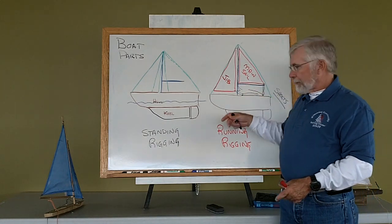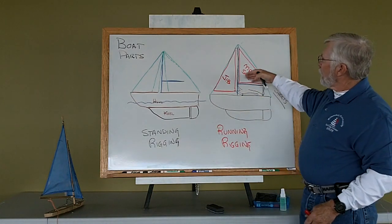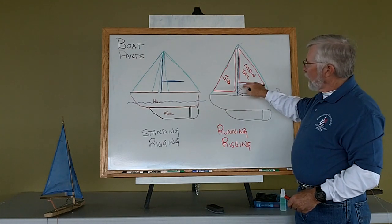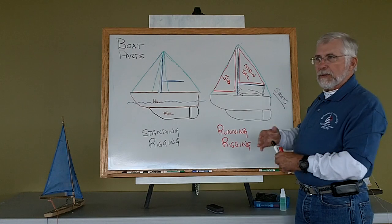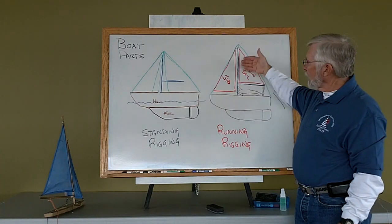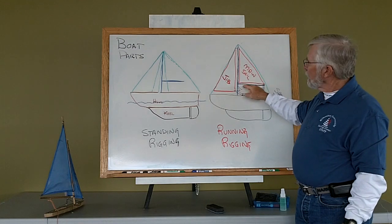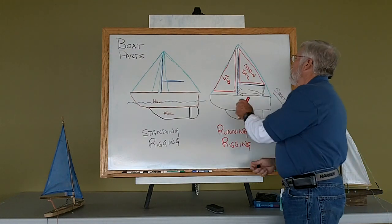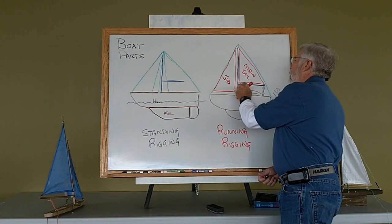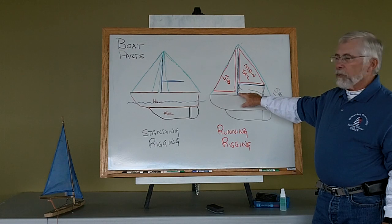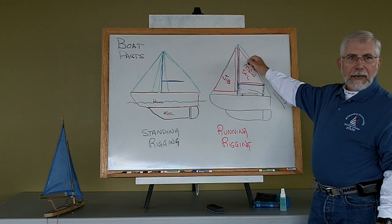To fine tune this just a little bit, when I have my sail up, I have two types of booms. There are booms that are fixed here on the mast and there are booms that actually slide up and down. If I have a boom that slides up and down, I will actually have another line that is used to pull the boom down. It's called a downhaul.